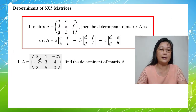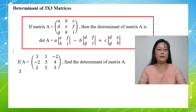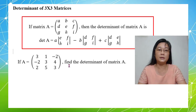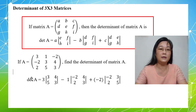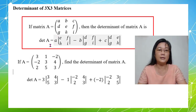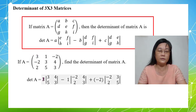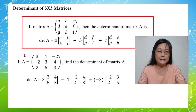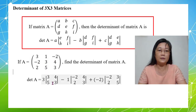Now let's look at this example. If A is given as a 3x3 matrix, find the determinant of matrix A. By using the method, first I take the first number from the first row, which is 3. The 2x2 determinant uses elements not in the same row and column as this first element — they are 3, 4, 5, and 3.